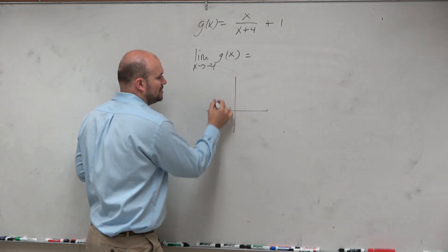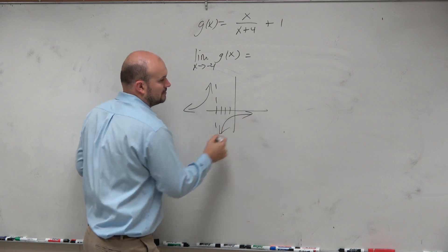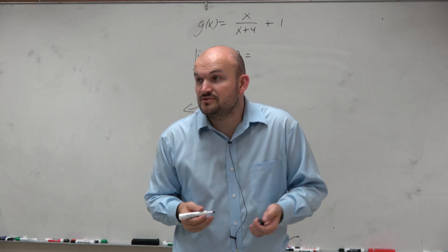We know there's an asymptote at 4, correct? Right? We know there's an asymptote at x equals negative 4.